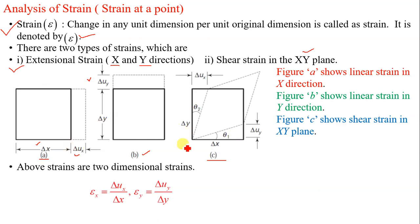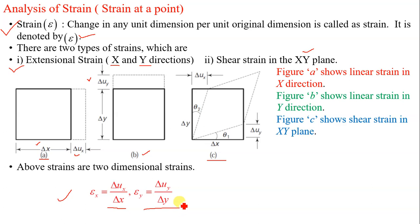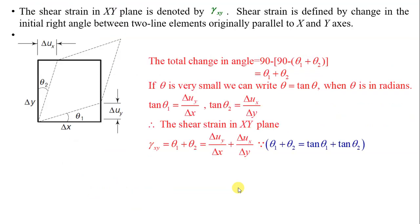The above strains are two dimensional. Using the definition from elementary strength of materials, epsilon x is equal to delta ux upon delta x, and epsilon y is equal to delta uy upon delta y. These are the extensional or linear strains in x and y directions respectively.